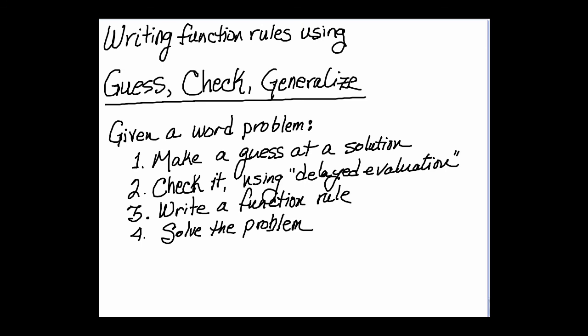And just for a review, here's the process again. We make a guess at a solution, sometimes two or three guesses. We check each guess, and we use delayed evaluation. We don't add up or subtract or do any arithmetic. We write down the whole computation. And then, after we've done that a couple of times, we guess X and write a function rule and then solve the problem.